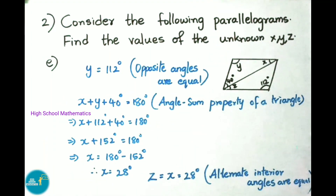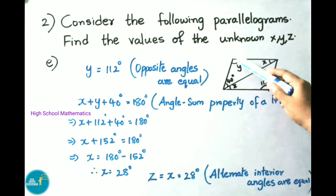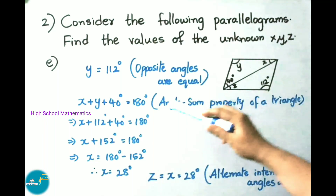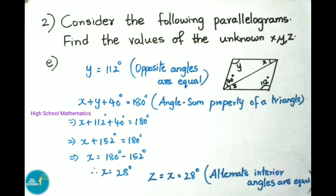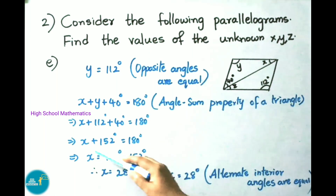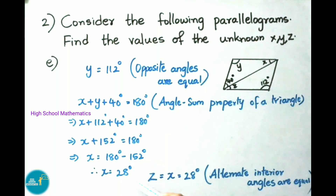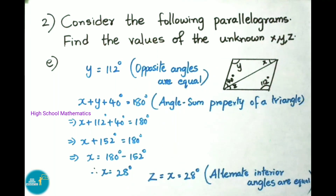Question E — from the figure, Y equals 112° because opposite angles are equal. Observing the triangle: X plus Y plus 40° equals 180° by the angle sum property of a triangle. Substituting Y as 112°: X plus 112 plus 40 equals 180, so X plus 152 equals 180, giving X equals 180 minus 152 equals 28°. Z equals X equals 28° because alternate interior angles are equal. Therefore X is 28°, Y is 112°, and Z is 28°.